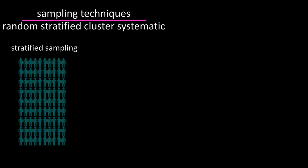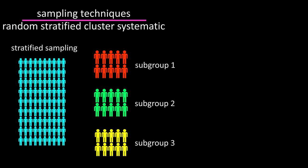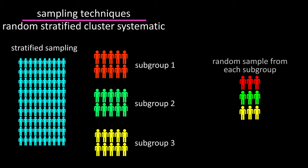A stratified sample is where a researcher will divide the population into subgroups to have members from each segment of the population, and a random sample is derived from each subgroup.